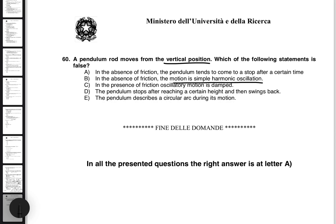In the absence of friction, the motion is simple harmonic motion. Obviously, that's true. In the presence of friction, oscillatory motion is damped. Yes, if there's friction, then oscillatory motion is damped, it could be changed. The pendulum stops right after reaching a certain height and then swings back. Yeah, we can remember the motion of a pendulum. It goes up there and then comes back in the middle, stops there for a second, and then continues moving again. Stops there at the highest height and then goes back to the middle and then it continues until it can stop if there is friction.